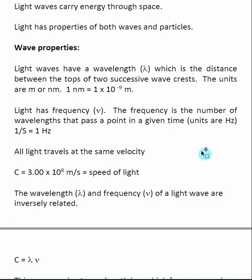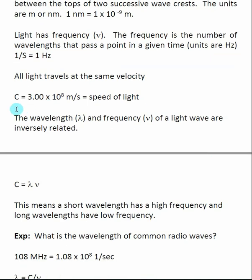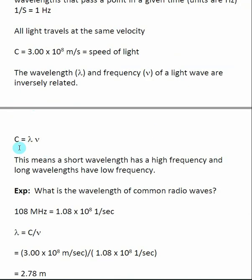All light travels at the same velocity, and here we see a pretty famous constant, the speed of light, which is c. The speed of light is 3.00 × 10⁸ meters per second. One of the more important equations we use is that c = λν, or the speed of light equals the wavelength of light times the frequency of light.